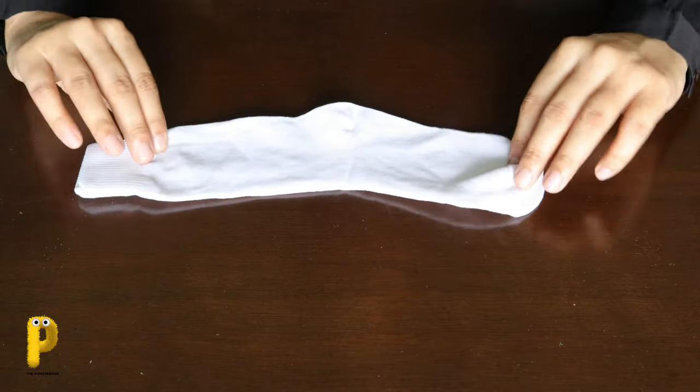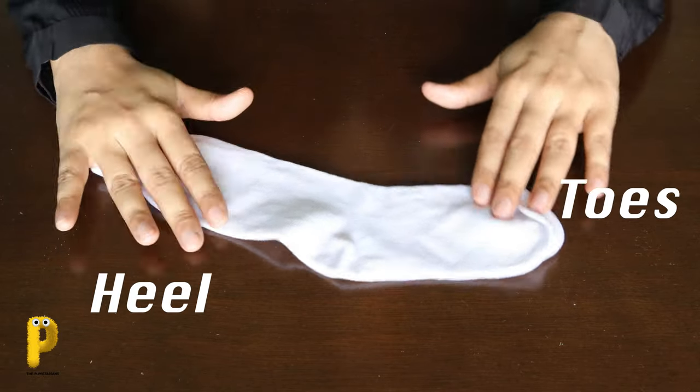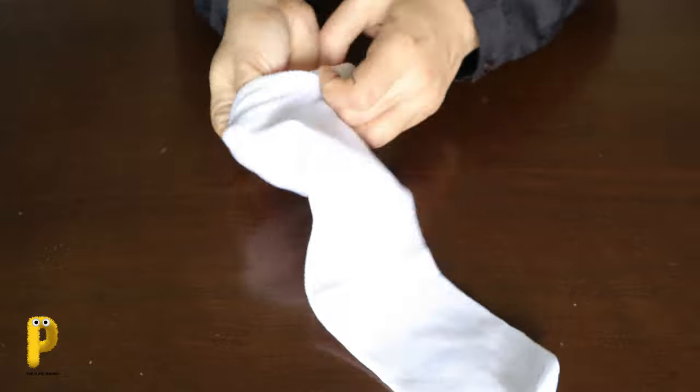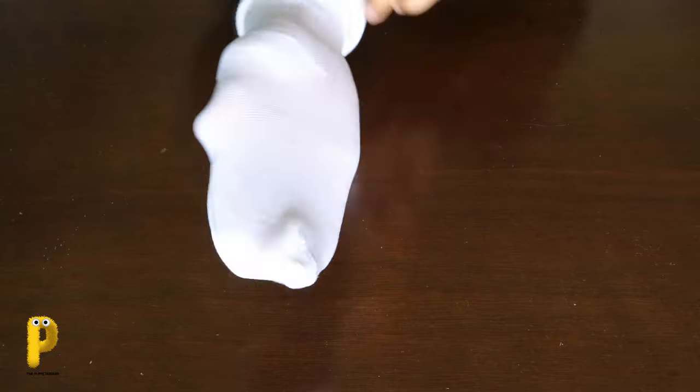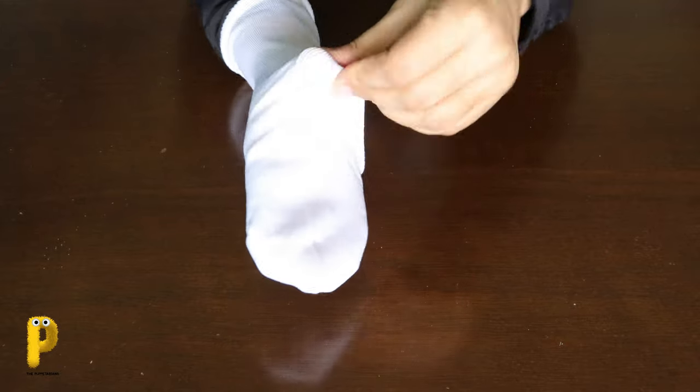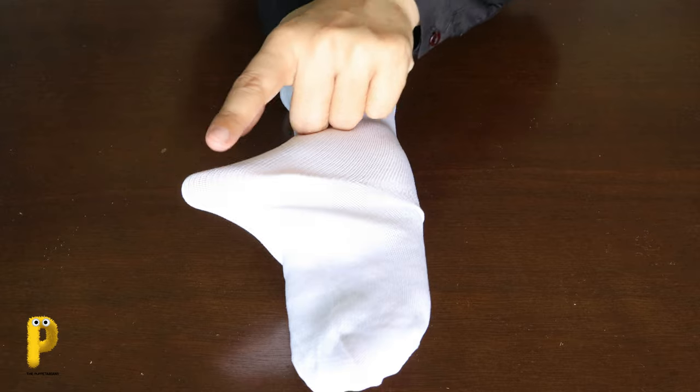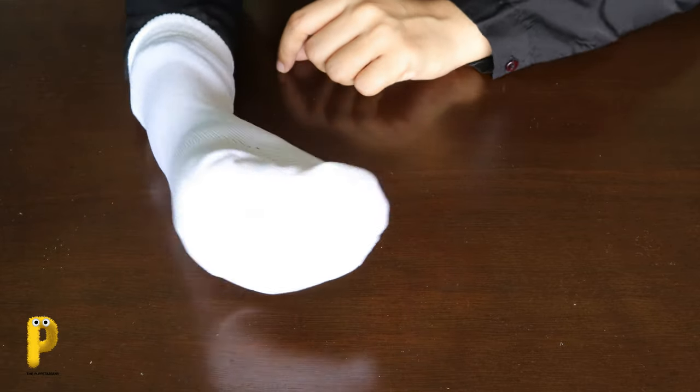Now in every sock you see there is a space for the toes and a space for the heels. Now put your hand all the way inside the sock. Your fingers should come where the toes come and your thumb should come where the heel part comes. Always wear your sock puppet like this only. Now we've got a mouth for the puppet.